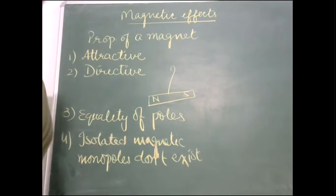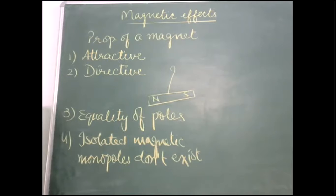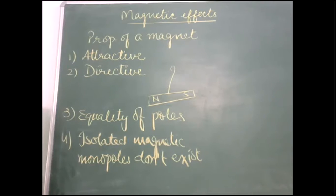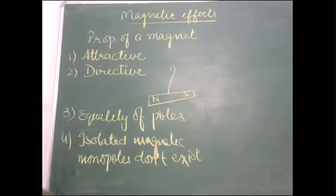Magnetic monopoles do not exist. If we have a magnet, it will always have two poles.